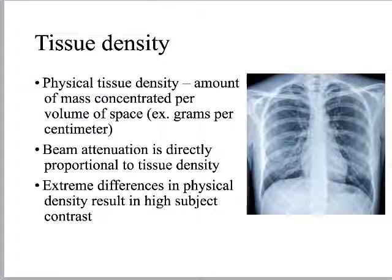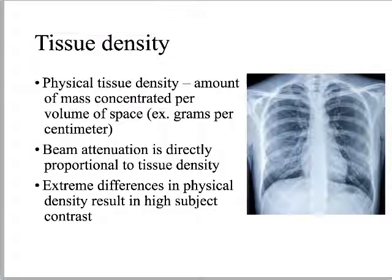This is about the prettiest chest x-ray picture I could find — if you want an idea of what an ideal chest x-ray looks like, this is close. The one thing they failed to do: they forgot to ask the patient to roll their shoulders forward so the scapulas are out of the field. Everything else looks great. So extreme differences in physical density result in high subject contrast. When I'm looking at that remnant beam exiting the patient, the signal is going to have a high degree of subject contrast because of the extreme difference in physical density between, for example, the lungs and the bones.